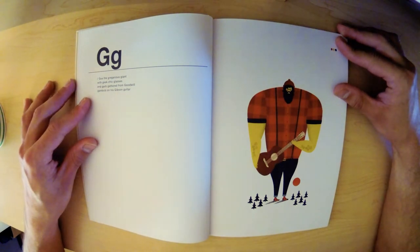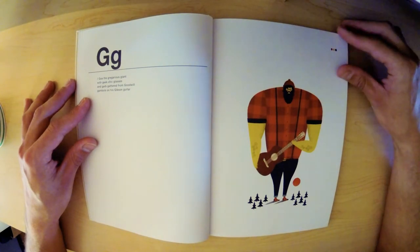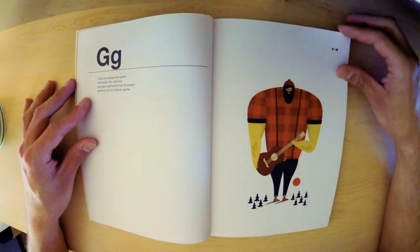G. Gus the gregarious giant, with geek-chic glasses and garb gathered from Goodwill, gambles on his Gibson guitar.